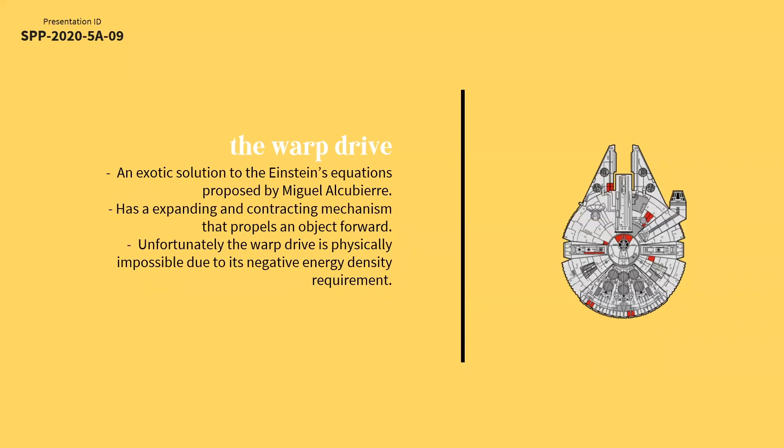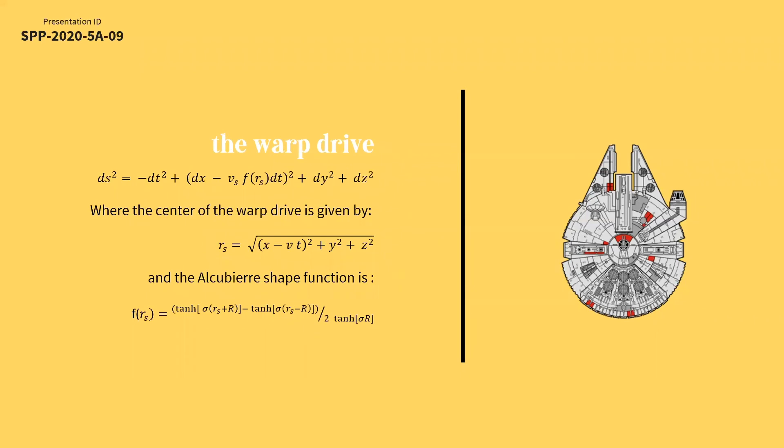Alcubierre warp drives, to be specific, are exotic solutions to Einstein's equations. It has an expanding and contracting mechanism wherein it expands the space behind the object and contracts the space ahead of the object, making it seem that the object is moving at speeds faster than light relative to a distant observer.